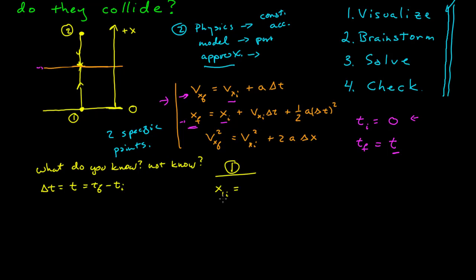From my coordinate system, the initial position of particle 1 is 0. I'm also interested in the final position of particle 1, x sub 1f — that's at the point where they collide, and I'm going to call that x, because that's the important parameter I'm looking to solve for. It's some value of x I don't know yet. This is not an independent variable; it's the final position in x that I'm trying to solve for.